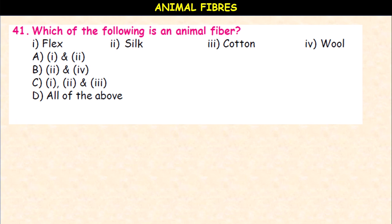Which of the following is an animal fiber — flax, silk, cotton, or wool? It is option B: silk and wool are both animal fibers.